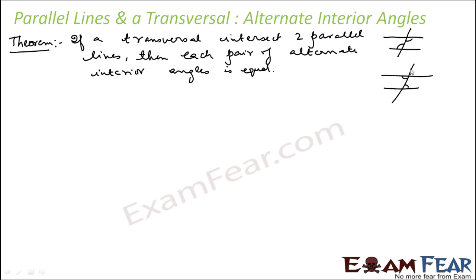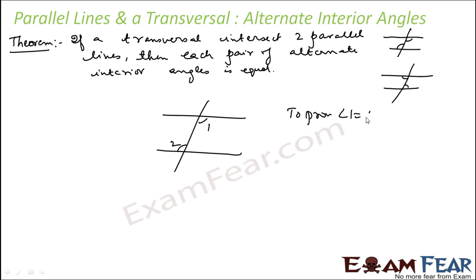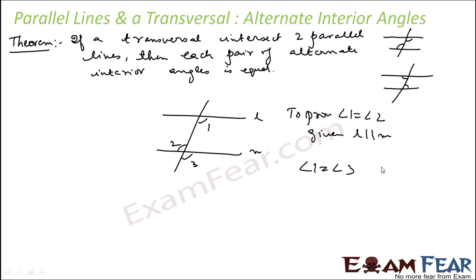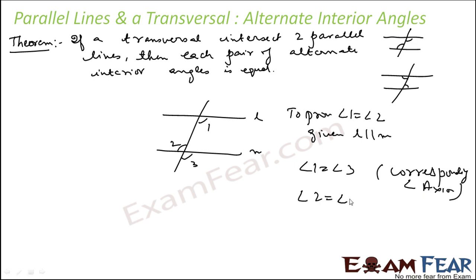Let me show you how to prove it. Let's assume this is angle one and this is angle two. I have to prove angle one is equal to angle two, given that L is parallel to M. Angle one will be equal to angle three as they are corresponding angles — using the corresponding angle axiom. Now angle two will be equal to angle three by vertically opposite angles. Merging these two equations, angle one equals angle three and angle two equals angle three, so angle one is equal to angle two.